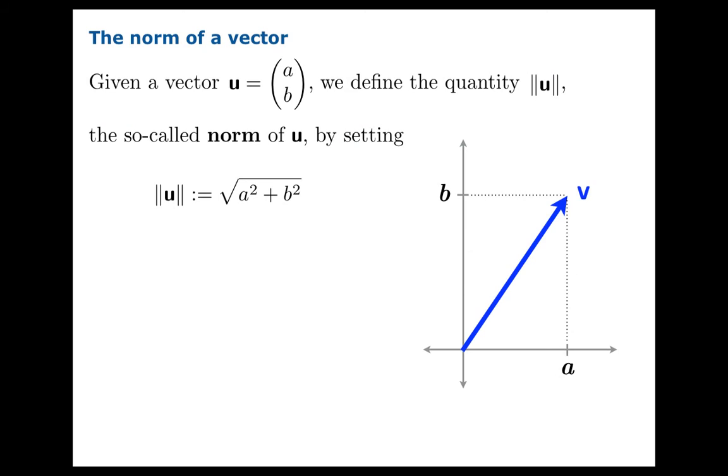First, a definition. Given a vector u with components a and b, we define the so-called norm of u as the quantity square root of a squared plus b squared, and we use this symbol with what looks like a double-barred absolute value. A few comments about this gadget.